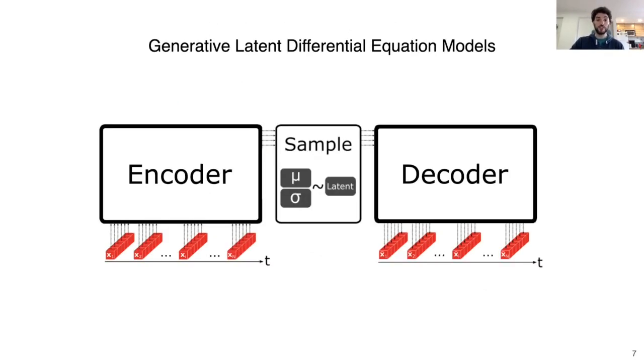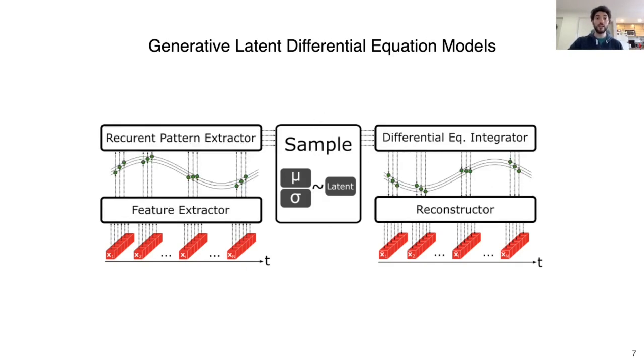You could think of these models as some kind of variational autoencoders with differential equations inside. Let's see a general structure shared by various models of this kind. You start with a high dimensional time series, and the goal is to reconstruct it by passing through a much lower dimensional latent space in which the dynamics are ruled by some differential equations.